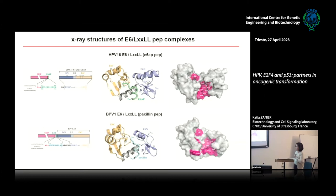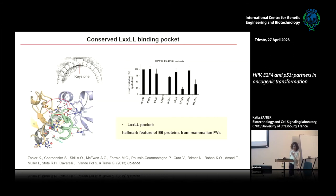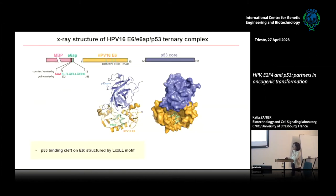Almost at the same time, with a similar approach, we obtained the complex of an insect papillomavirus protein from a phylogenetically distant virus infecting horses, bound to an LxLL motif from the paxillin protein. These structures show that the peptide binds in a pocket formed by all modules of the protein — the two domains and the linker. This pocket is very conserved across E6 proteins from papillomaviruses. We could also identify a key residue we call the keystone arginine, which makes contacts between the two domains and the peptide, maintaining the whole architecture.